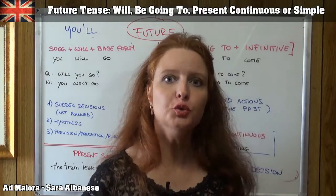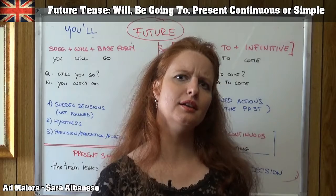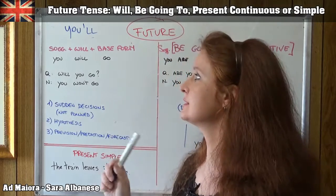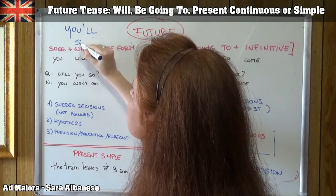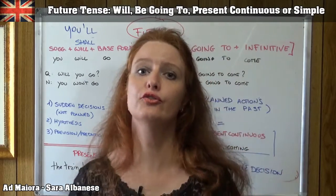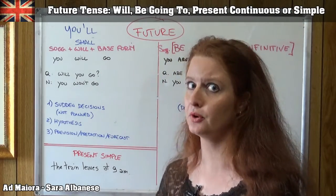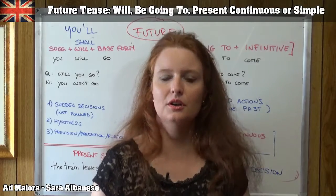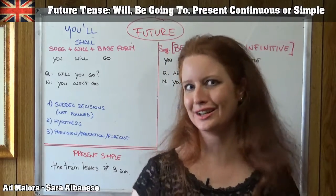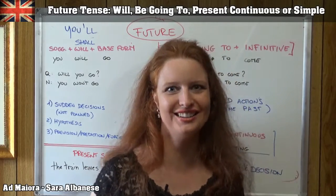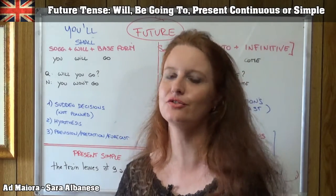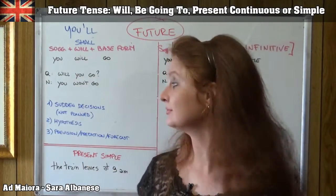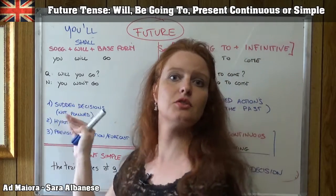Now, when shall we use 'will'? By the way, I just said 'shall we use' — what is 'shall'? Shall is the same as 'will', used for the first person singular or first person plural. We also use it when we want to suggest doing something together, like 'Shall we go out?' — proposing a good idea and inviting others to join. But 'shall' is only used for first person singular and plural.